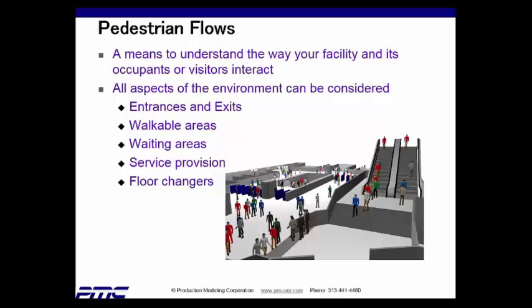All of the things in your environment can be put into the model. This includes the entrances, the exits, and any walkable areas — maybe not where you intend people to walk, but if they can do it, they might choose to go that way. Where are people waiting for service? Where are people hanging out looking out a window? Those waiting areas can be in there. Whatever services you're providing — a ticket counter at a movie theater, the hostess stand, the check-in counter at a hospital — that service provision area is also included.